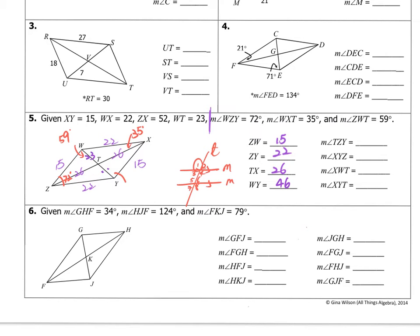For example, I know if WZT is 59, this angle must be 59 because it's alternate interior angles. So these two angles must be congruent, and 35 must be congruent with this angle here.